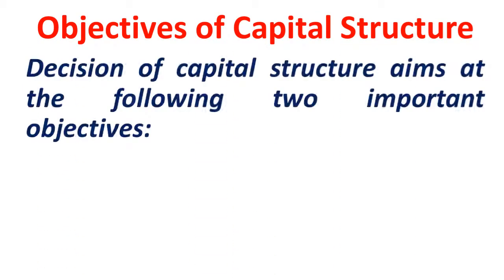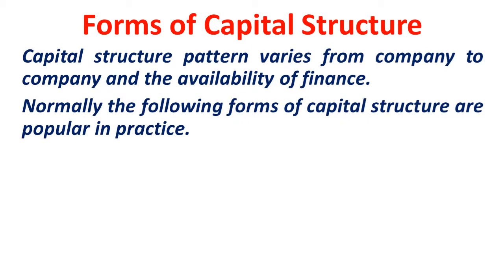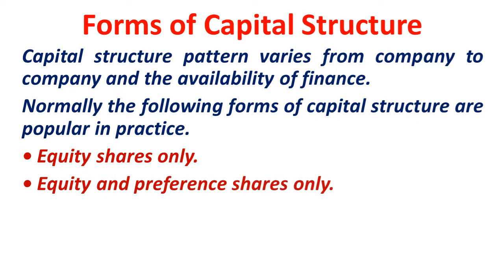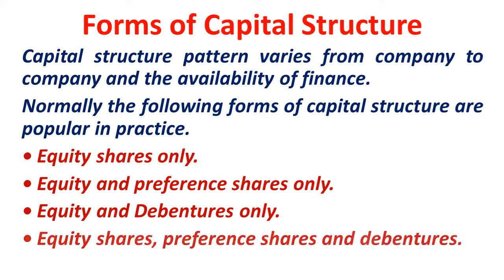The objectives of capital structure: the decision aims at two important objectives — maximizing the value of the firm and minimizing the overall cost of capital. When you minimize the overall cost of capital, the value of the firm will be maximized. Forms of capital structure: in a company form of business, you can have total equity shares only, or equity and preference shares, or equity and debentures (which refers to long-term loans), or a combination of all three — equity, preference, and debentures.